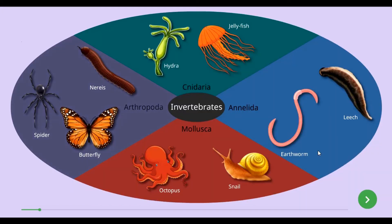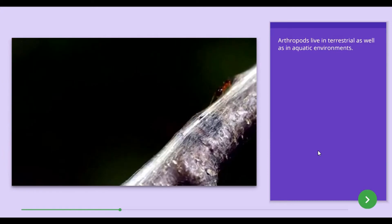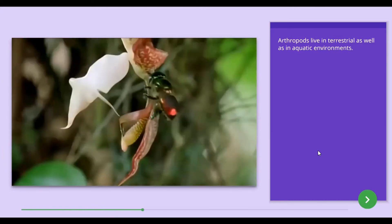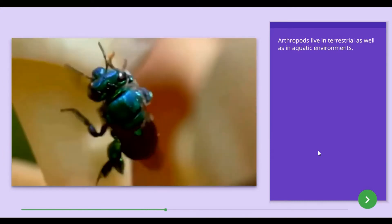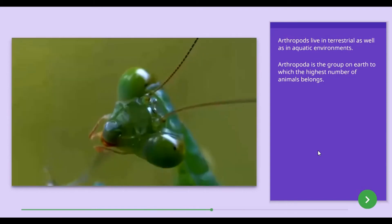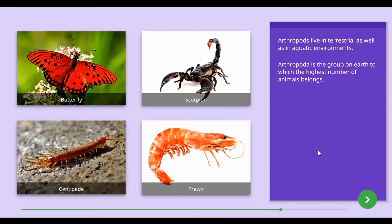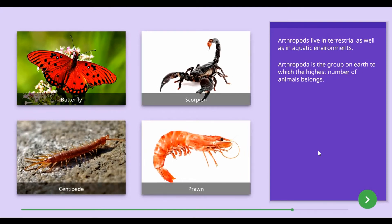We will now study about another invertebrate group: the Arthropoda group. Arthropods successfully live in terrestrial as well as aquatic environments. Arthropoda is the group on earth to which the highest number of animals belongs. Butterfly, scorpion, centipede, and prawn can be given as some examples of animals belonging to the Arthropoda group.